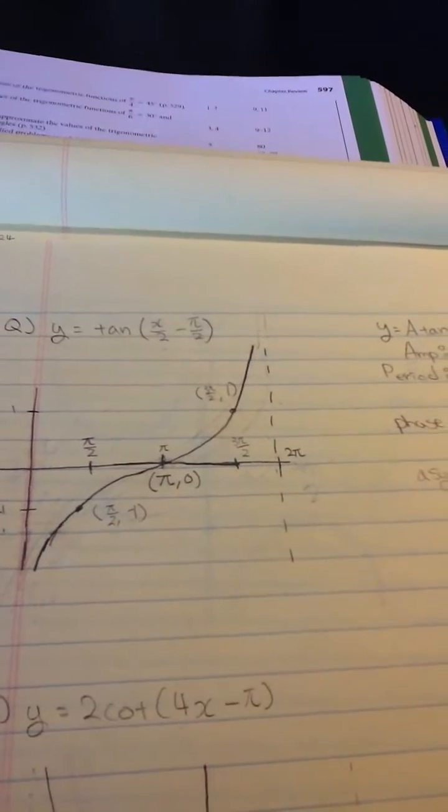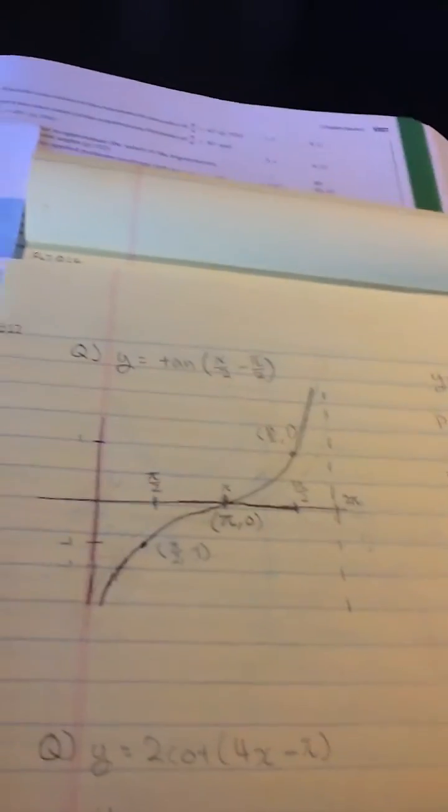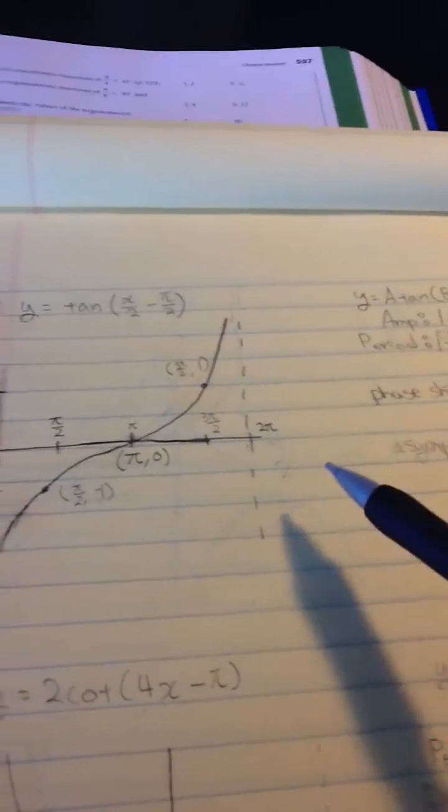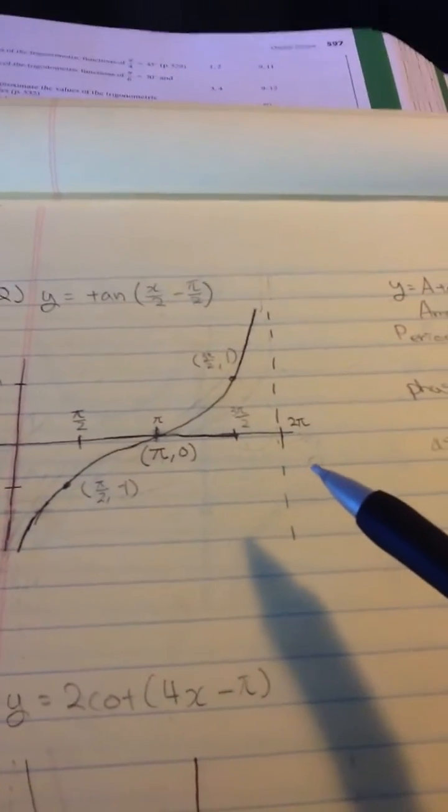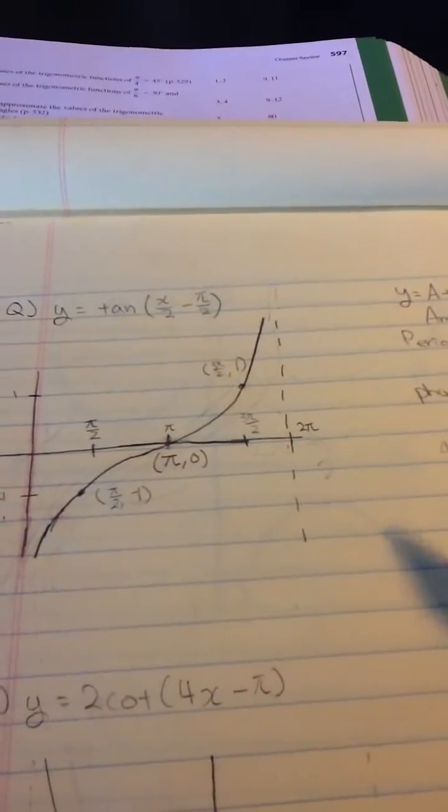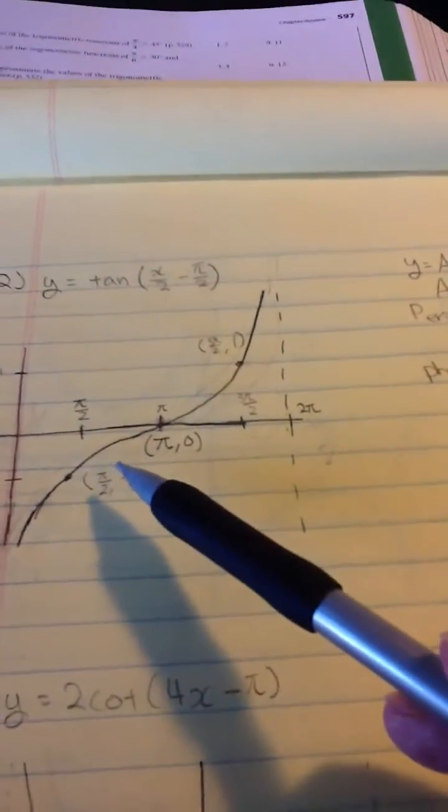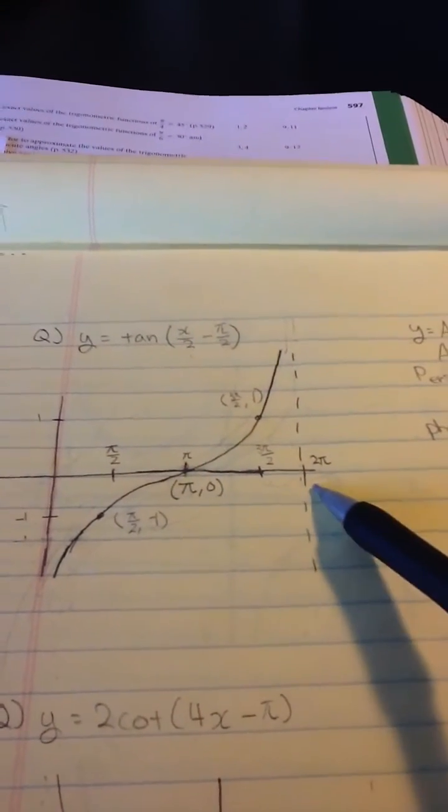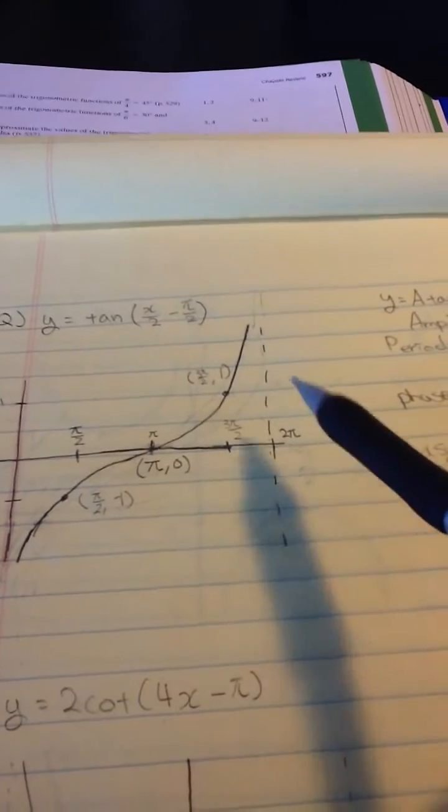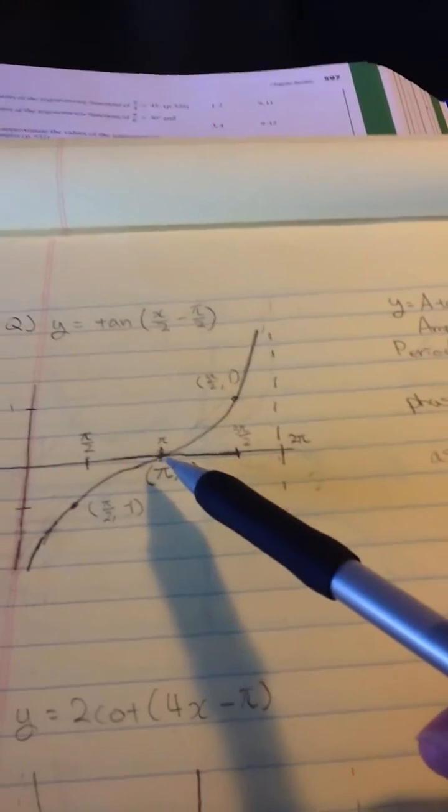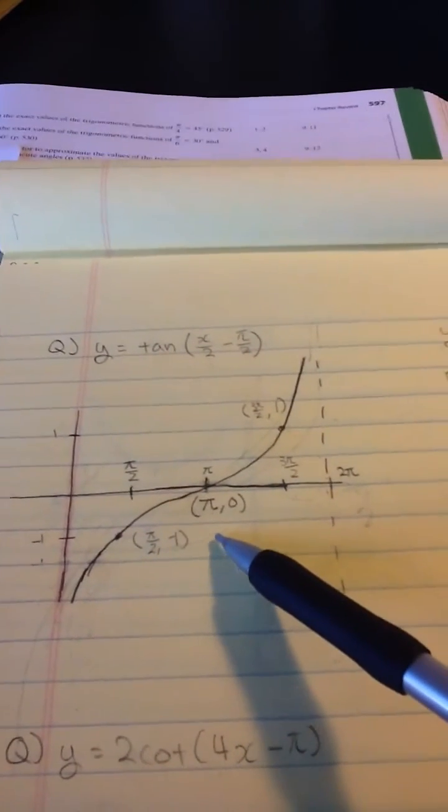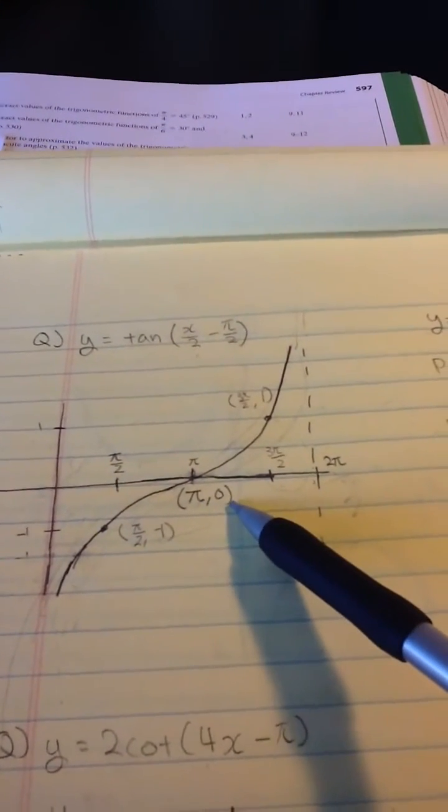Here first of all, we have an asymptote where the tangent function goes to infinity, and here 2 pi and 0, 0. Because 2 pi is the period, we have a midpoint or intersection with x here at x equals pi and y equals 0, so pi, 0 here.